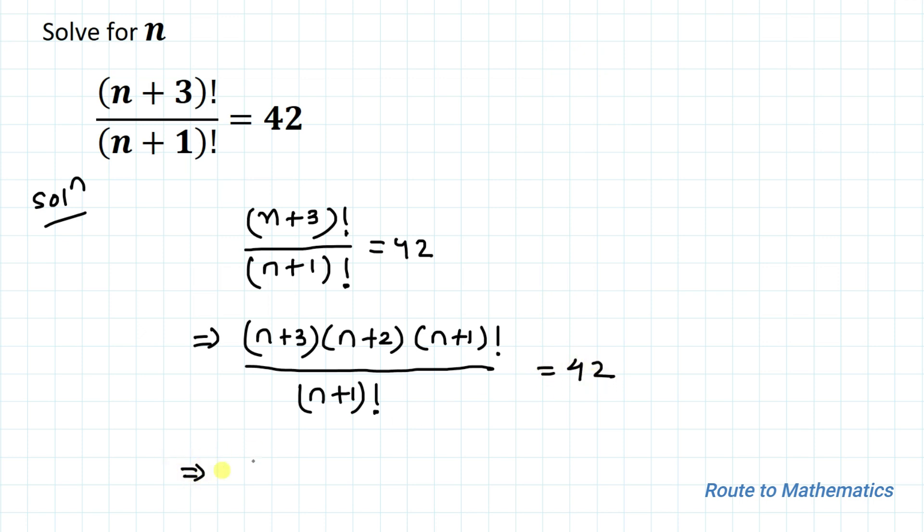This implies that by canceling (n+1)! from numerator and denominator, we have (n+3) multiplied with (n+2) equals 42.